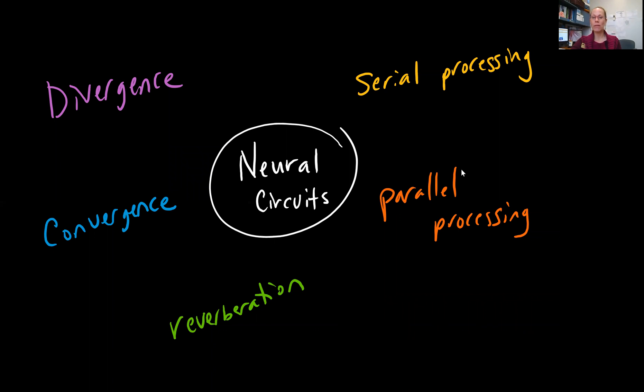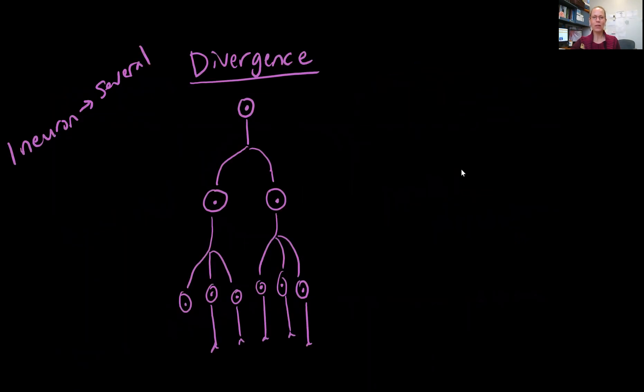We're looking at five different types of neural circuits: divergence and convergence, which are opposites of each other. Divergence means to split in two, and convergence means two paths coming together. We have serial processing, parallel processing, and reverberation.